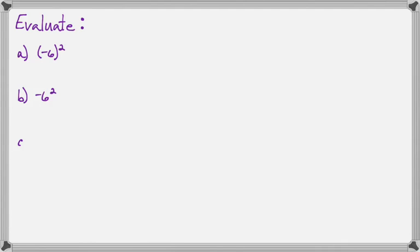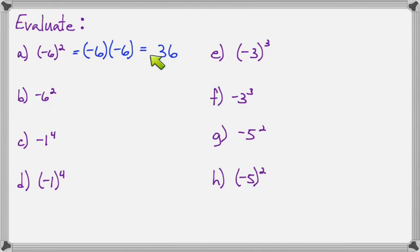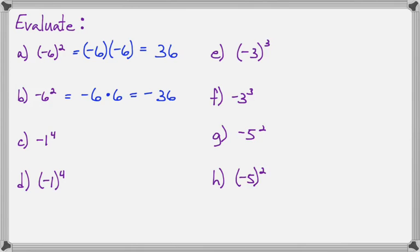We're going to evaluate a few more together for practice. On the first one, negative 6 is the base, so negative 6 gets put down two times. Two negative signs give us a positive answer, so 6 times 6 is 36. On part B, 6 is the base, so the negative gets put down one time but the 6 gets put down twice. So 6 times 6 is 36, and there's a negative in front, so it's negative 36. On part C, 1 is the base and the negative just sits there. So 1 times 1 times 1 times 1 times 1 is 1, and there's a negative in front, so it's negative 1.